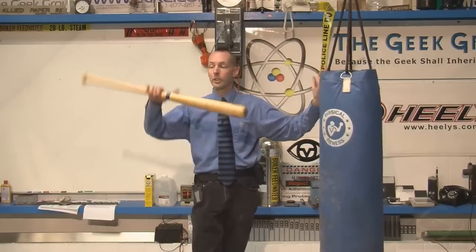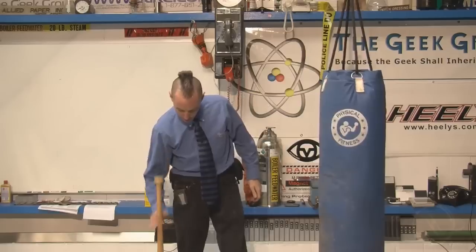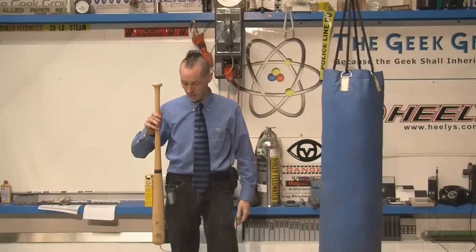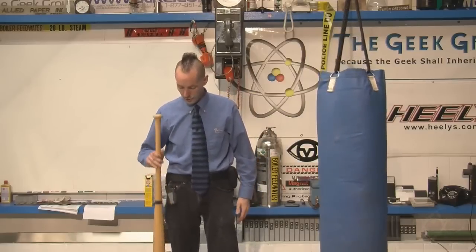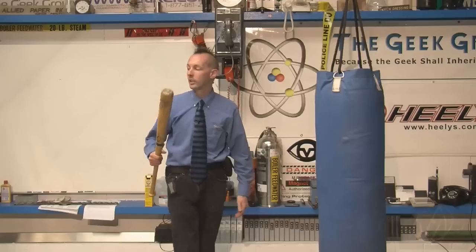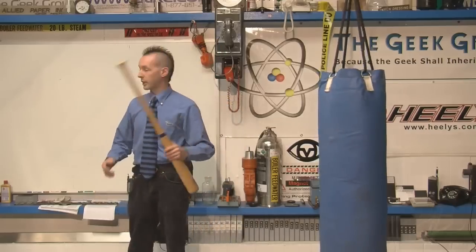Even this bat has a resonant frequency. You can hear it if you smack the bat on the ground, it rings. That's a couple kilohertz. It's a pretty high frequency, but it makes a sound. That's the resonant frequency of this wooden bat. If it were aluminum, it would probably ring at a higher frequency.